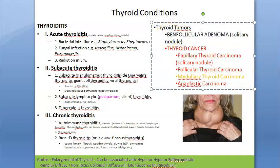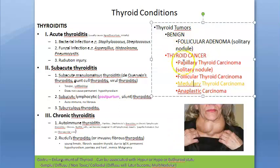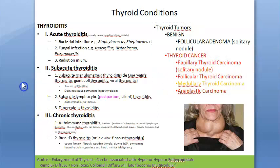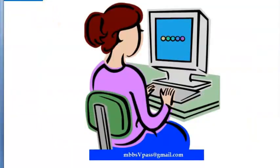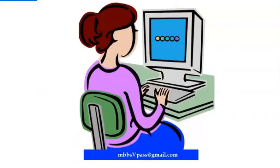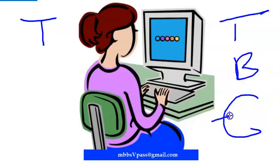On the other side you have tumors of the thyroid. You have one benign condition — follicular adenoma — and then you have thyroid cancers: papillary thyroid carcinoma, follicular thyroid carcinoma, medullary thyroid carcinoma, and anaplastic carcinoma. Note that 'thyroid' appears in the middle of each name, unlike papillary or medullary carcinomas in breast cancer.